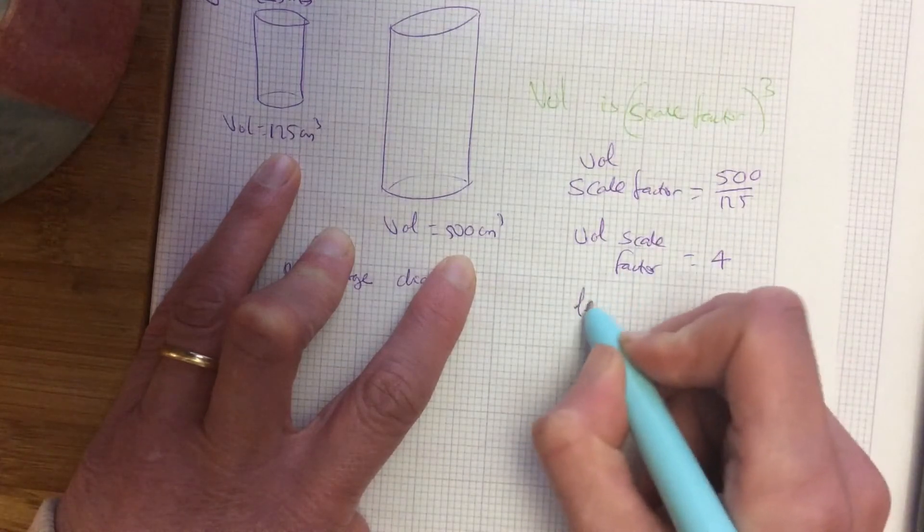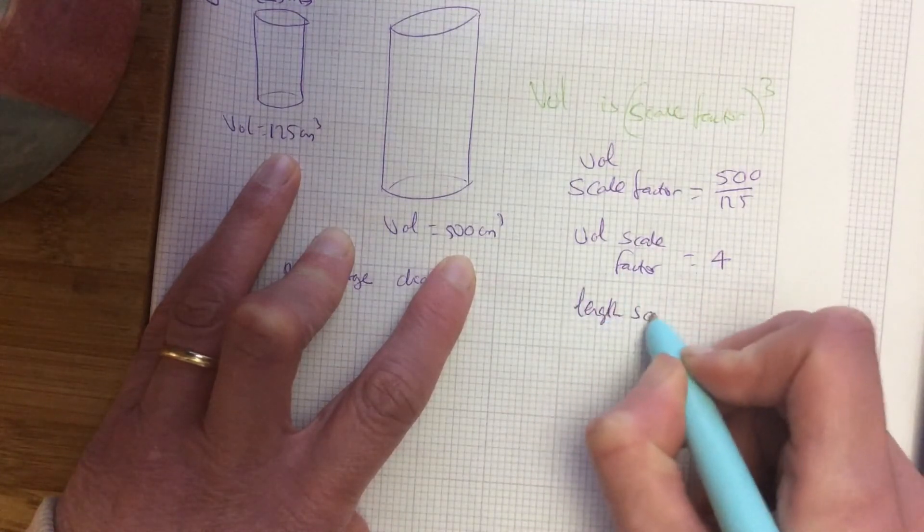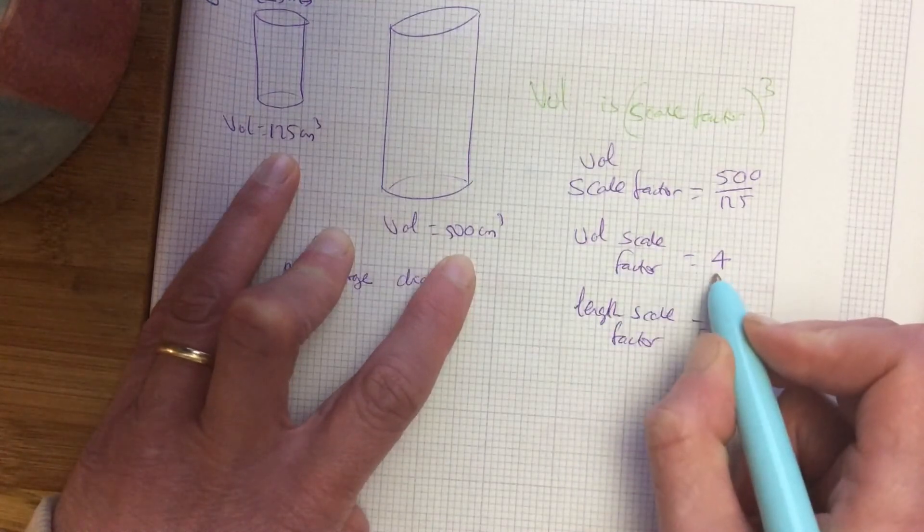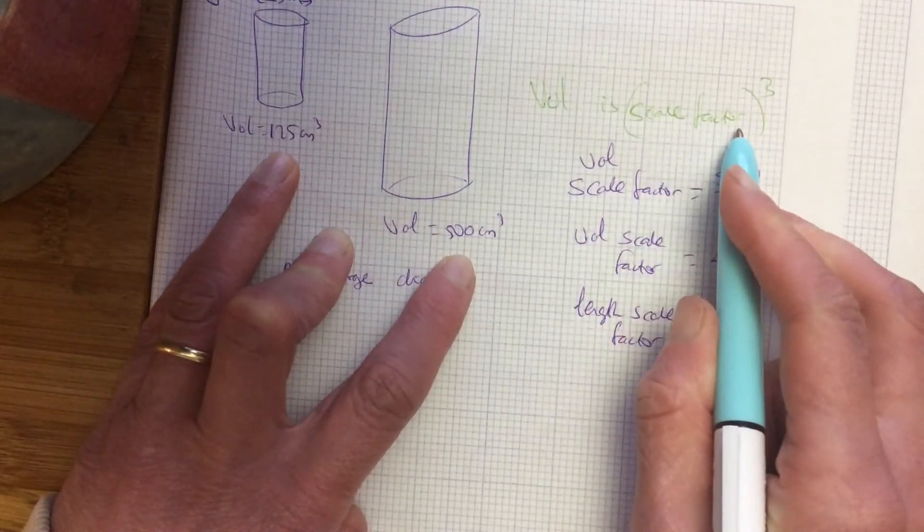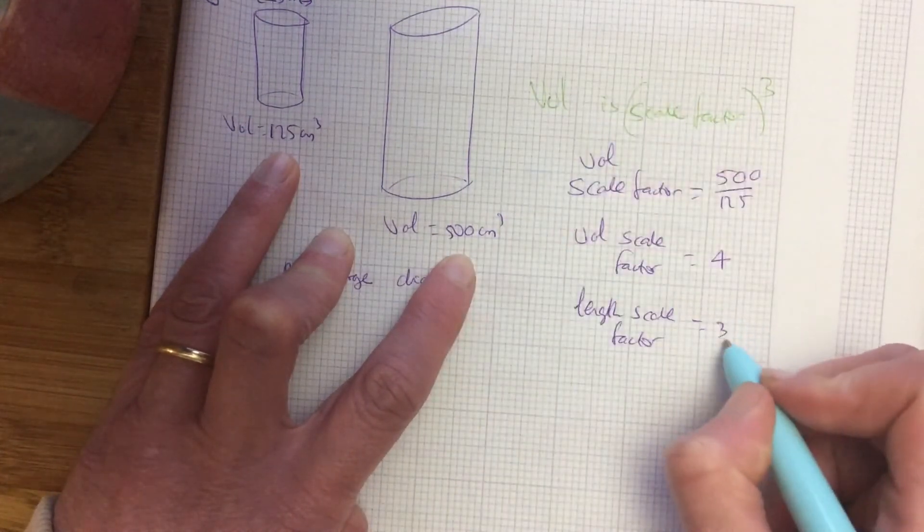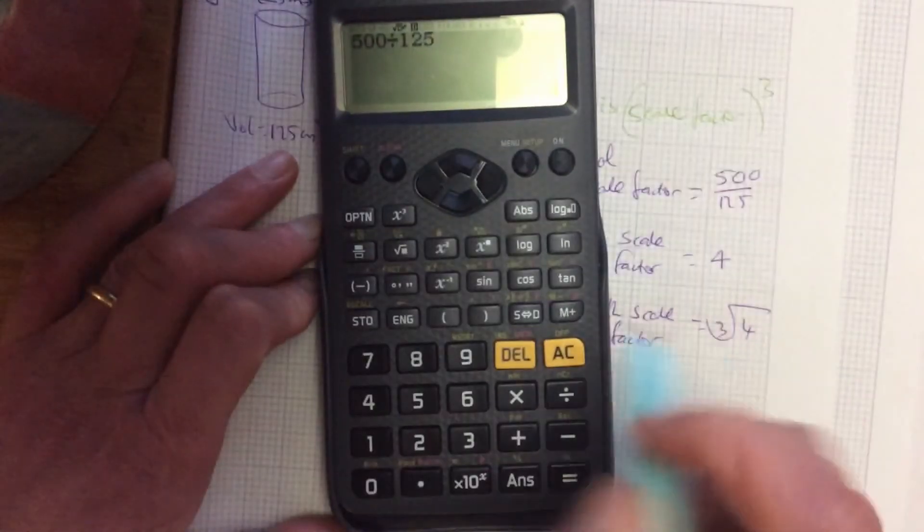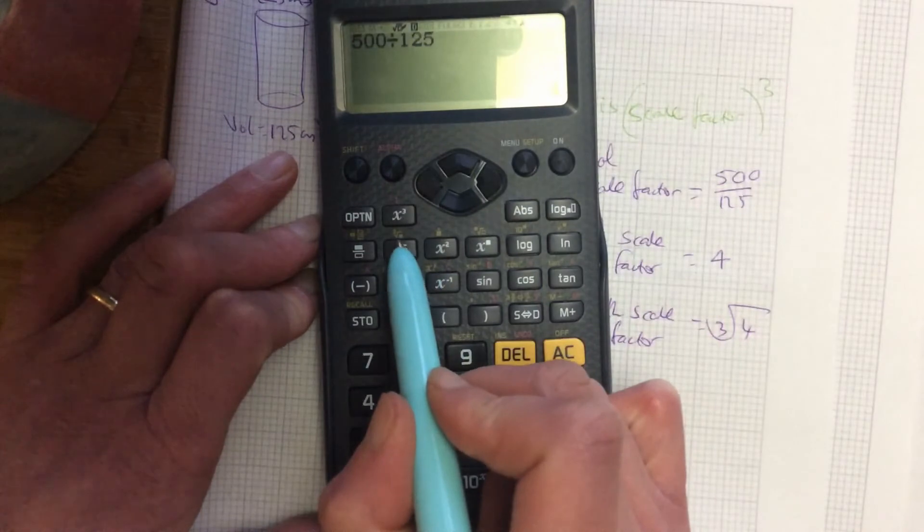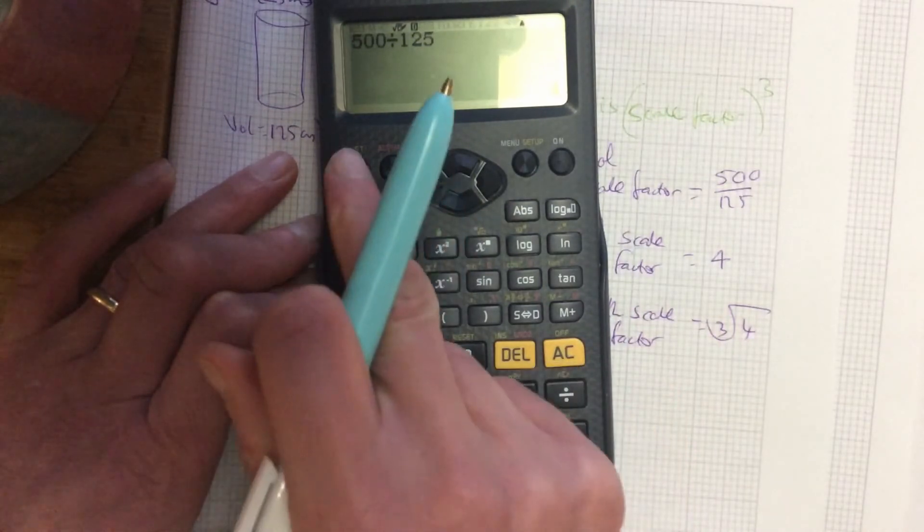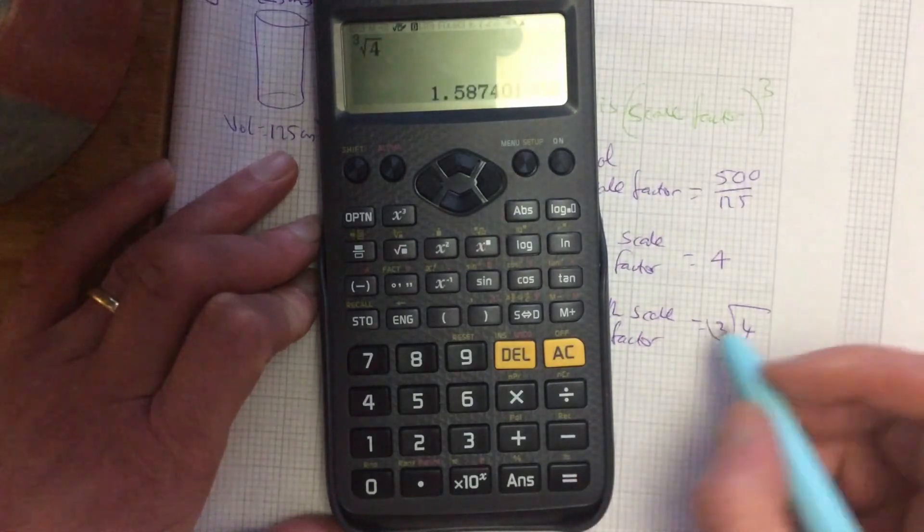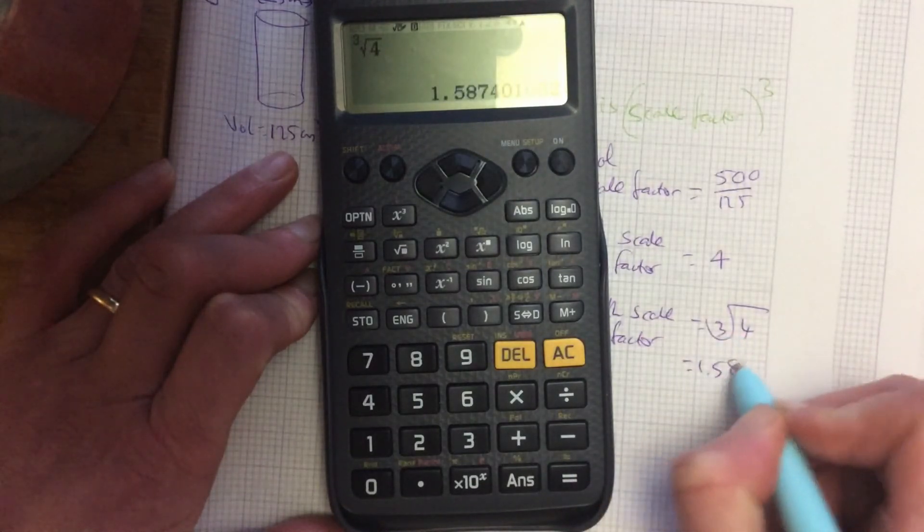So how would I work out the length scale factor then? If the volume scale factor is cubed, if you want to go back just to your ordinary length, it's the cube root of 4. Now if you look at your calculators, see there? That's your cube root. So you go shift, cube root 4. And you get 1.587.